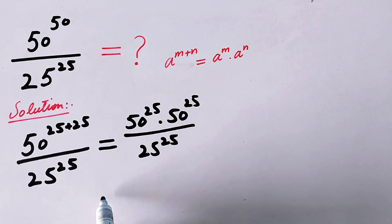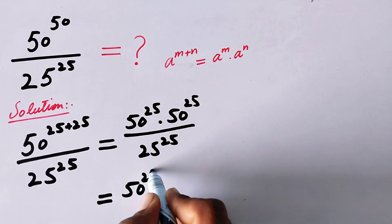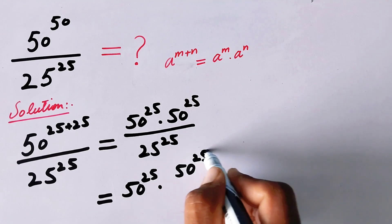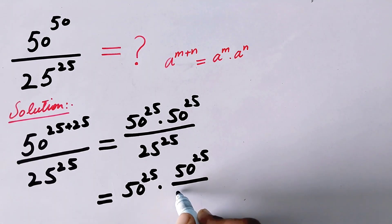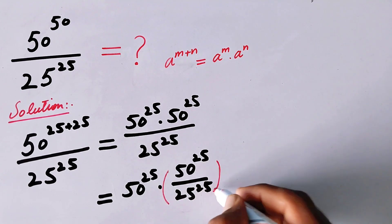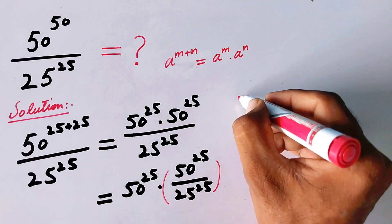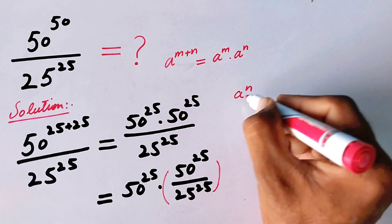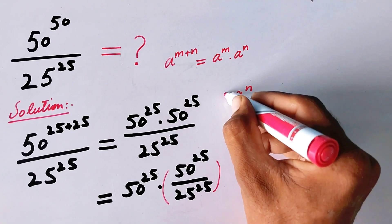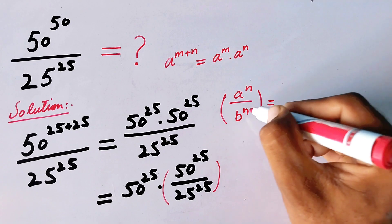Now we can write this form according to the formula: a^n / b^n = (a/b)^n, where we can take the common exponent. Here, it will be 50^25 · (50/25)^25.